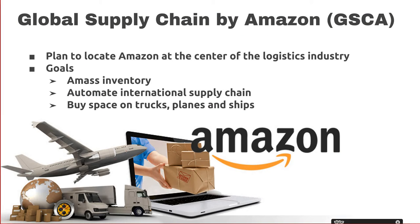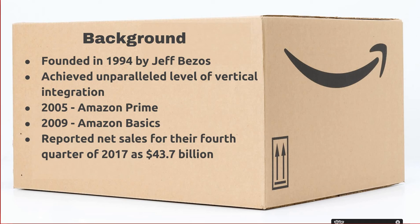Amazon was founded in 1994 by Jeff Bezos as an online book retailer. The company established 14 leadership principles then that they still adhere to today. Included among them are principles such as customer obsession, hire and develop the best, think big, frugality, and deliver results. The company is a retailer, distributor, and manufacturer — an unparalleled level of vertical integration — but is also still a viable space for small retailers to sell their wares.